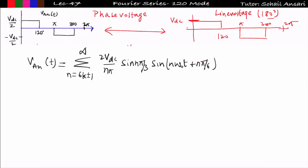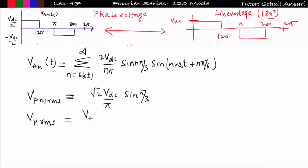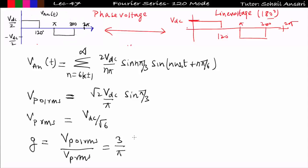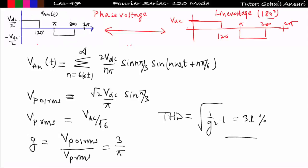Once we have the Fourier series expression, we can find the fundamental RMS value of phase voltage Vp01_rms. Substituting n = 1 gives Vp01_rms = (√2 · Vdc / π) · sin(π/3). From the previous lecture, the total phase RMS voltage is Vdc/√6. The distortion factor is Vp01_rms / Vp_rms = 3/π. So the distortion factor is the same in both 180° and 120° conduction modes, and the THD is also the same at 31%.